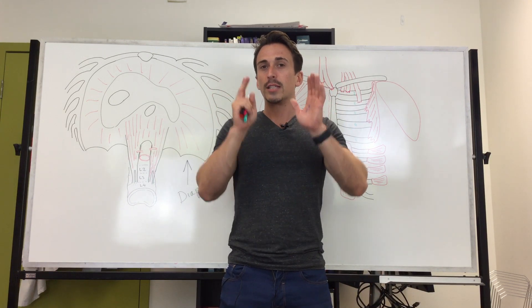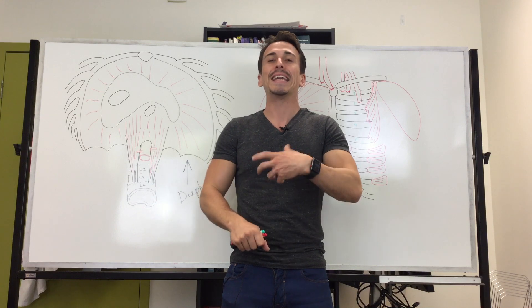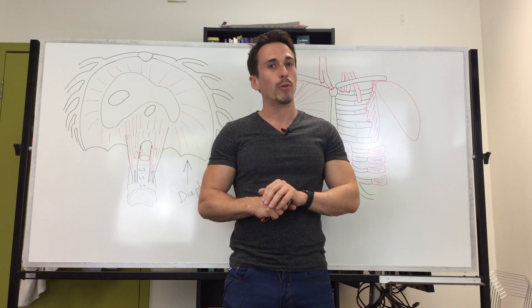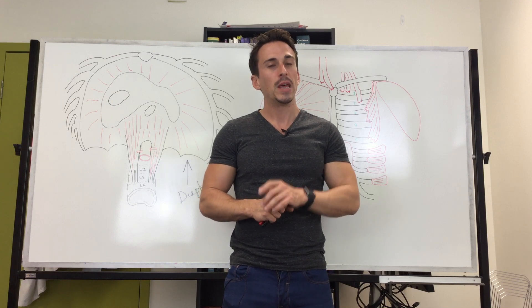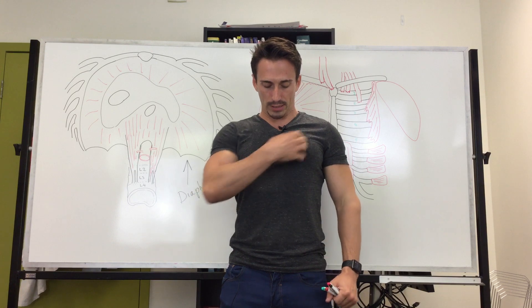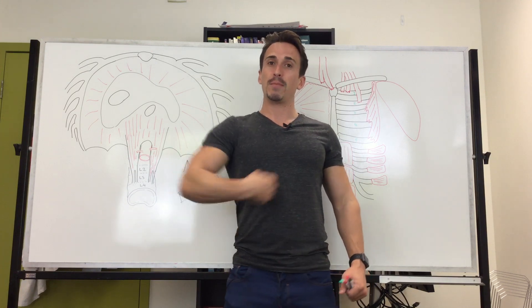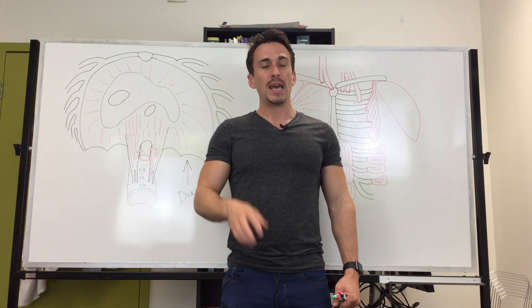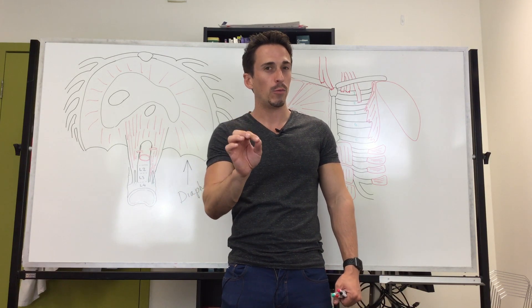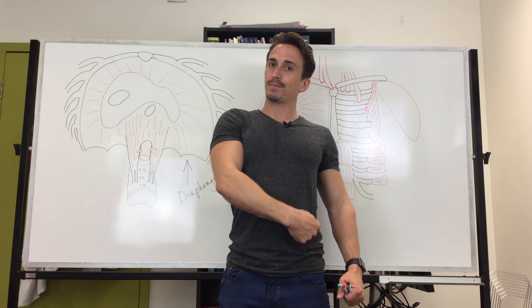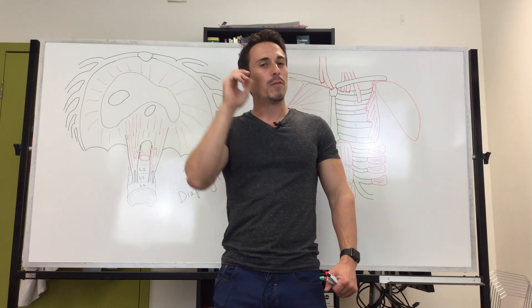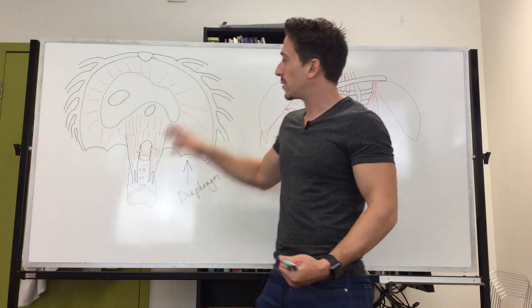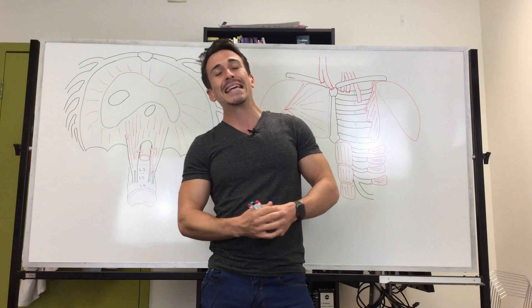We do this by contracting muscles. The major muscle involved in inspiration is the diaphragm. The diaphragm is the muscle that separates the thoracic cavity from the abdominal cavity — it's the anatomical barrier between those two cavities. It is an unpaired, dome-shaped skeletal muscle.